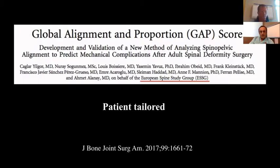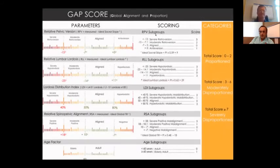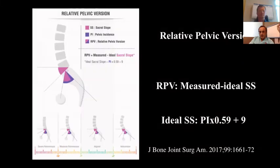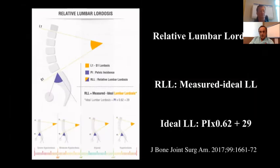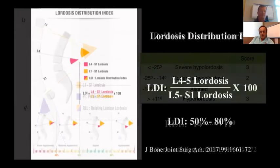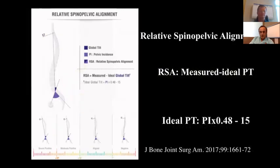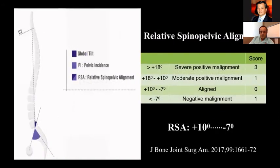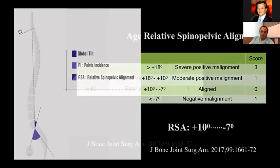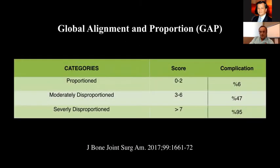A paper from the European Spine Study Group described the Global Alignment and Proportions score — it's patient-specific. They described five subgroups, one of which is relative pelvic version. All parameters are described according to the patient's pelvic incidence, and if you follow these rules, you may have fewer complications after surgery. Comparing GAP and Schwab-SRS values, GAP score is more reliable. However, there are no comorbidities and no coronal balance parameters in this scoring system.